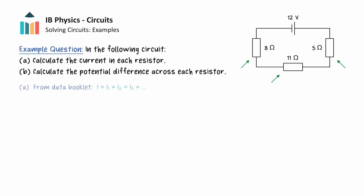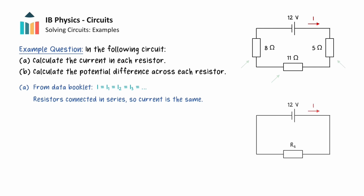Since this is a series circuit, the current in each of the three resistors must be the same. This circuit can be simplified by replacing the three resistors in series with a single equivalent resistor that results in the same current around the circuit.